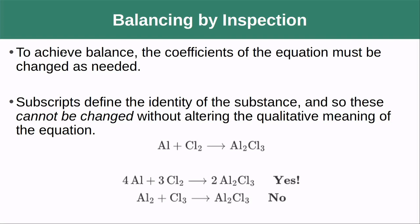So how do we go about balancing a reaction when we're not given a balanced reaction to start off with? To achieve balance, the coefficients of the equation must be changed as needed. We do not change the subscripts. The subscripts define the identity of the substance and so they cannot be changed without altering the qualitative meaning of the equation. That means that if I was given an unbalanced equation like this, I could change the coefficients to make it balanced on either side, but I couldn't just change the subscripts to make them balance. I'm changing what type of molecule I have here and here.